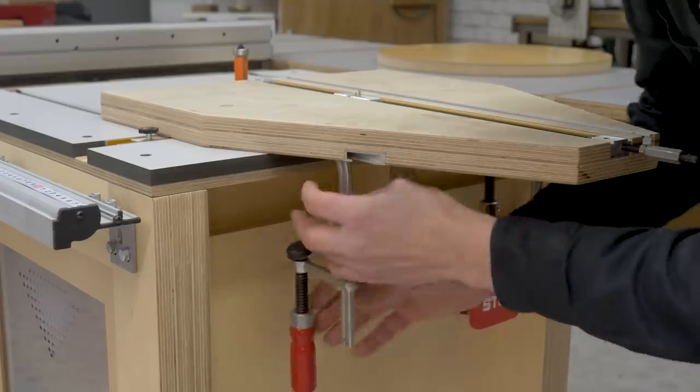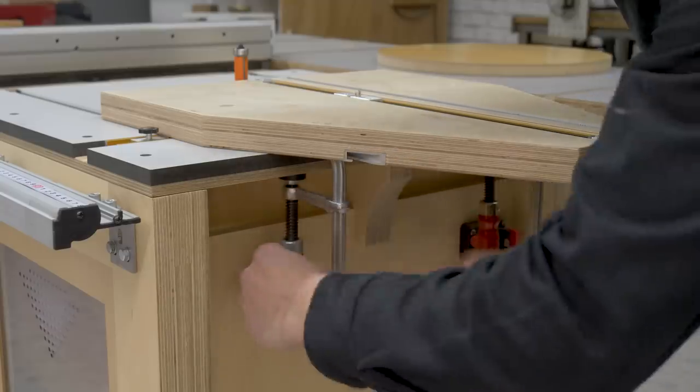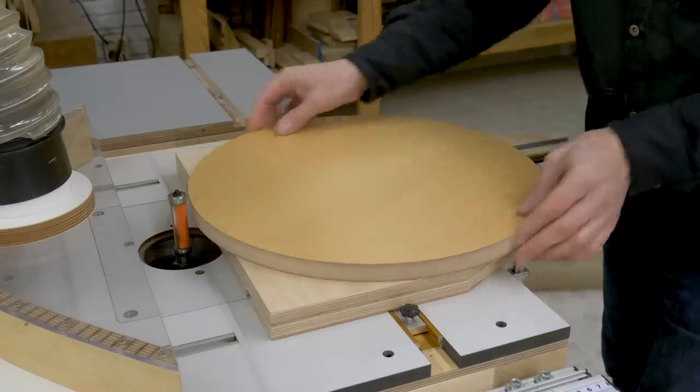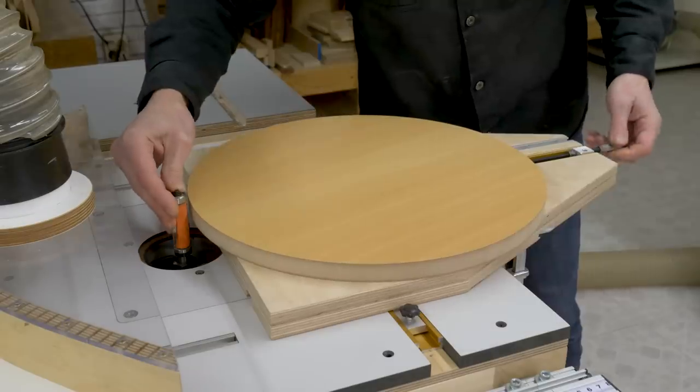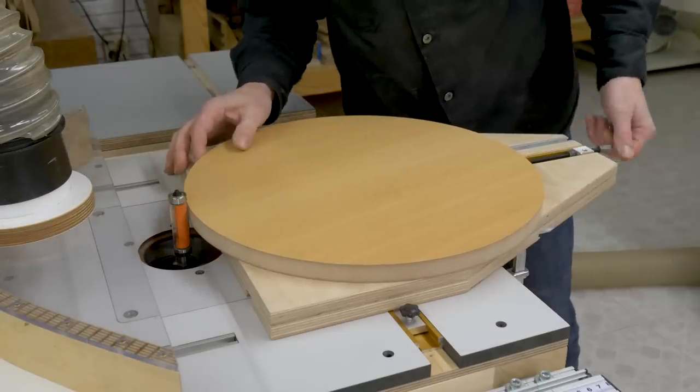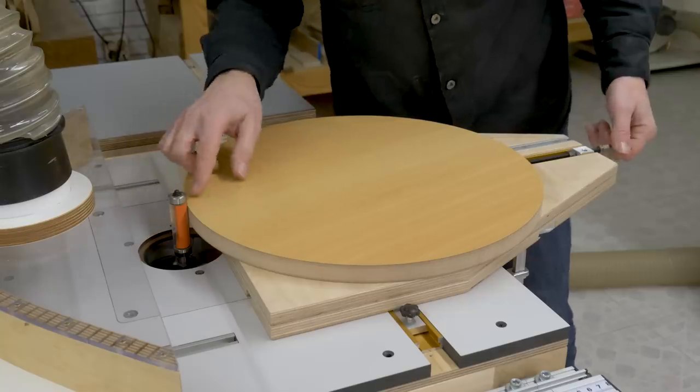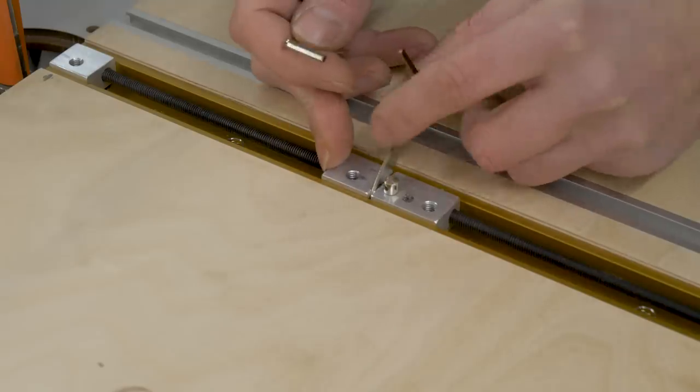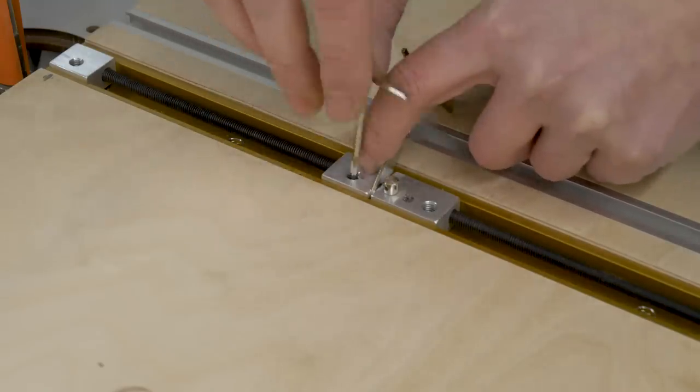In this case, I'm going to attach the jig to the router table from the start. Next we'll place the piece on the jig and turn the rod until the piece touches the router bit.